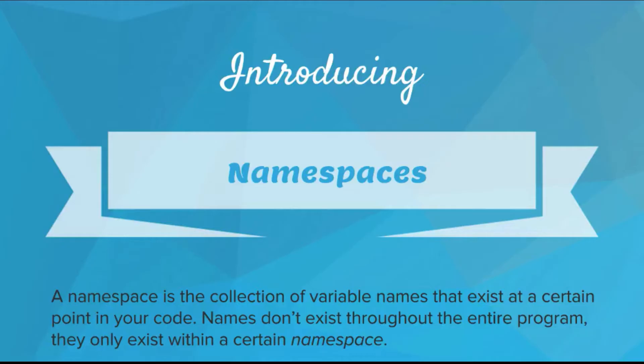A namespace is the collection of variable names that exist at a certain point in your code. Names do not exist throughout the entire program — they only exist within a certain namespace.